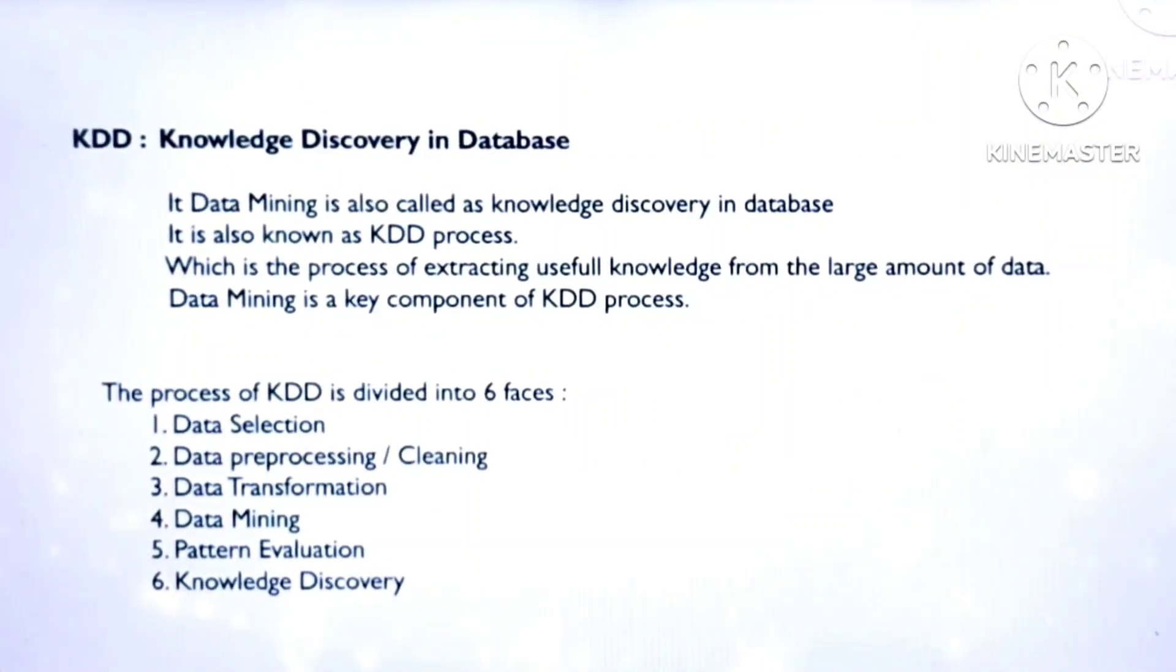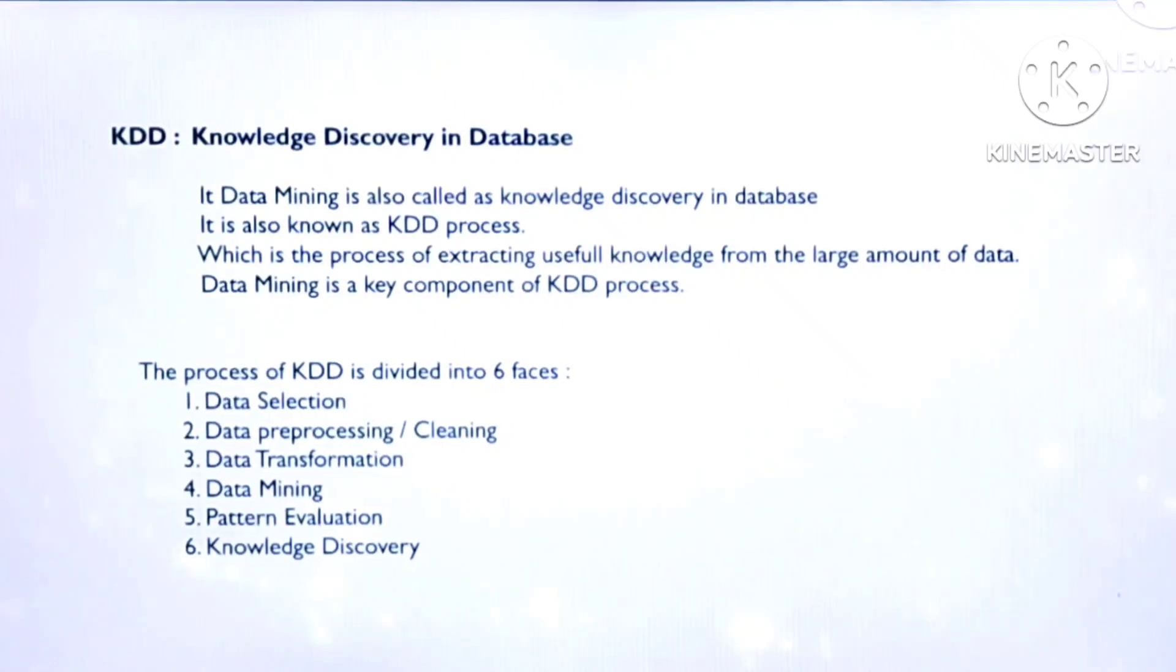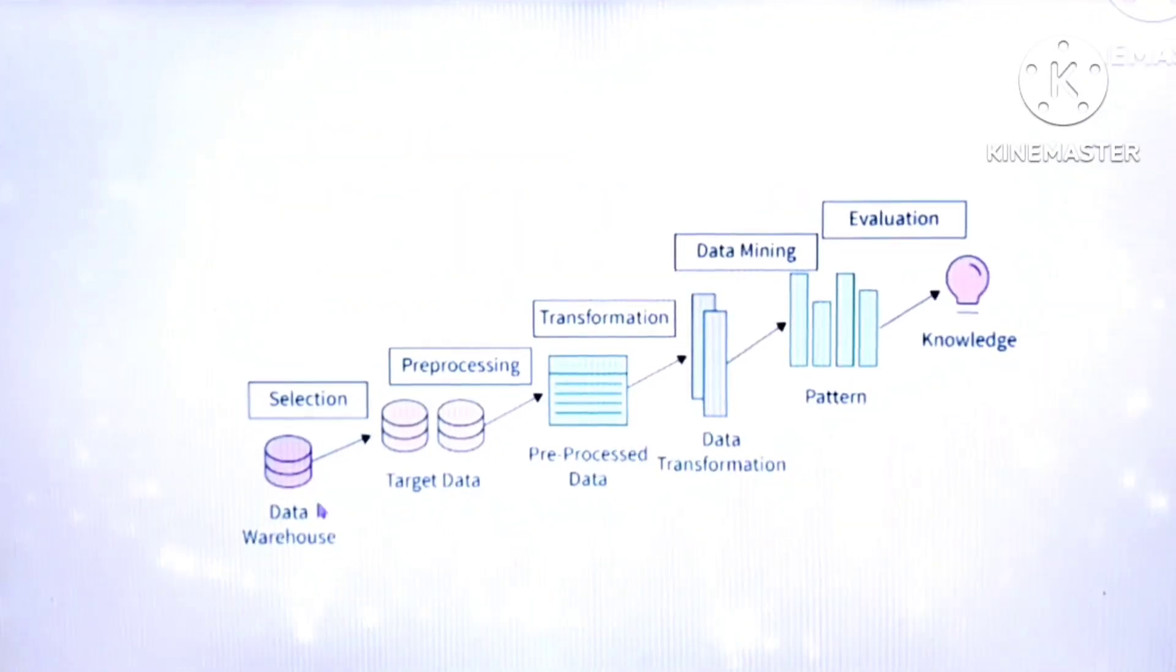Data mining is also called as knowledge discovery in database. So the short form is KDD. In the large amount of data, you have to find out the useful data. How you will find out? By using KDD process. So the process of KDD is divided into six phases. First one is data selection. Second one is data pre-processing or cleaning. Third one is data transformation. Fourth one is data mining. Fifth one, pattern evaluation. Sixth one, knowledge discovery. So this is the KDD process diagram.